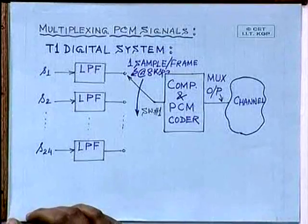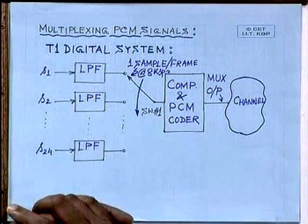Good morning everybody. Today's topic is multiplexing, specifically time division multiplexing of PCM signals. You have already studied about frequency division multiplexing in an earlier course. The general block diagram given at the beginning for a digital communication system did not explicitly include any block labeled as multiplexer or demultiplexer. It was missing — there was no such block really.